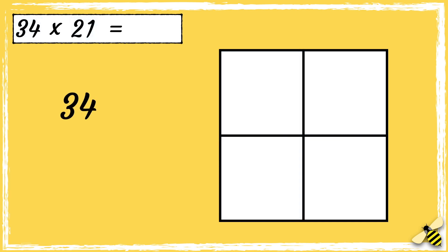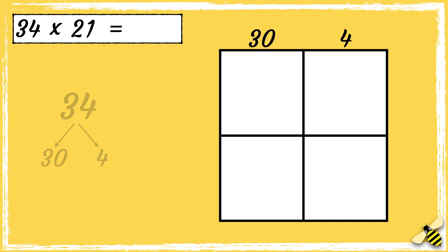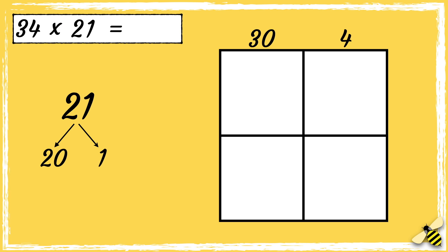We need to partition the number 34, so we have 30 and 4. Along the top, we'll put 30 on top of one box and 4 on top of the other. Now let's partition the number 21 — we have 20 and 1. Down the side, we're going to put 20 next to one box and 1 next to the other.